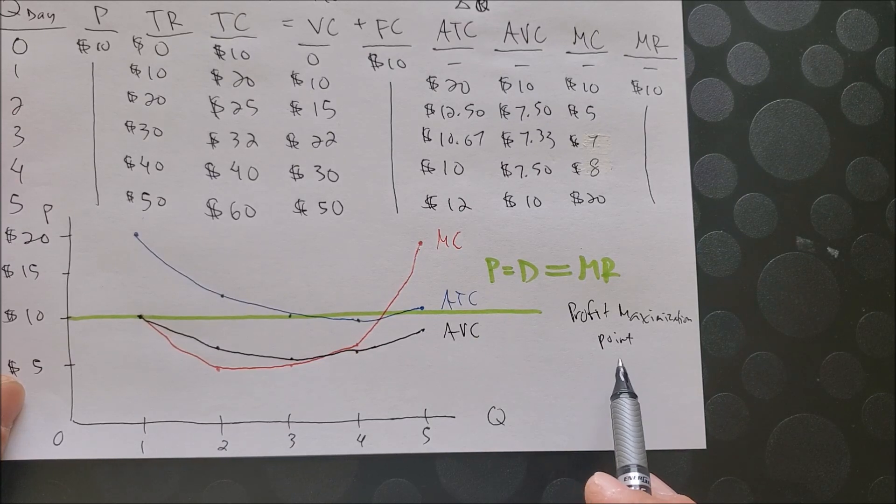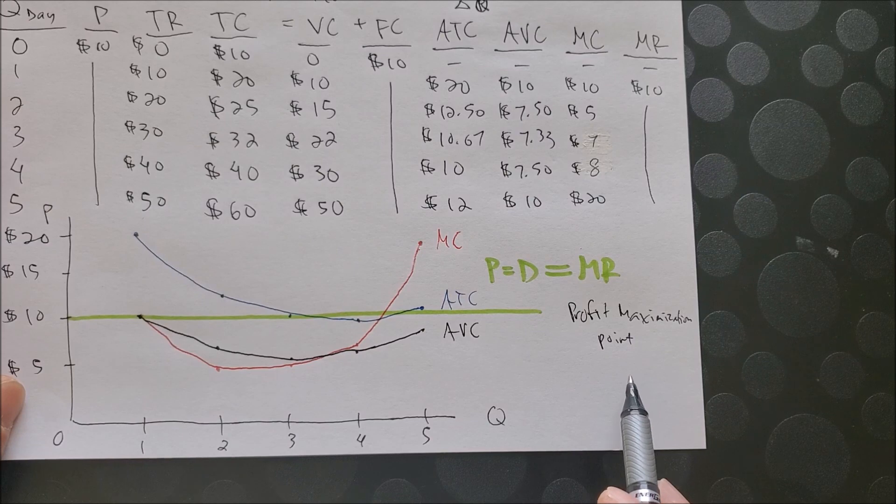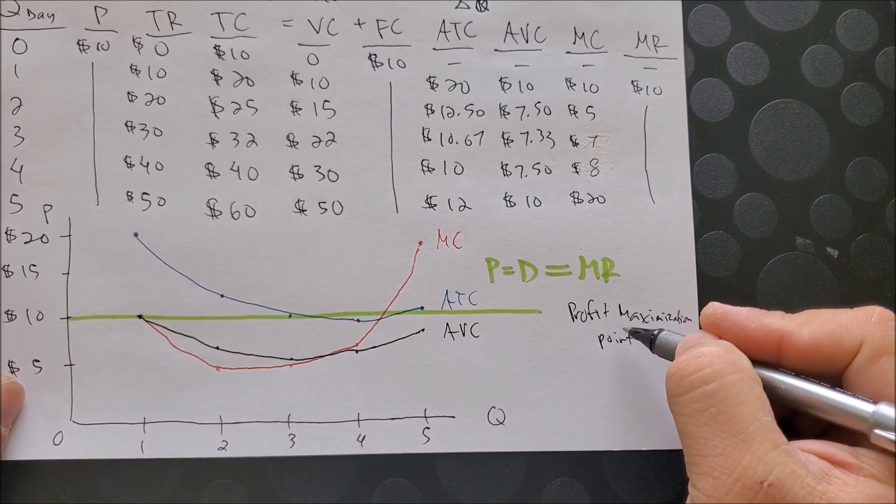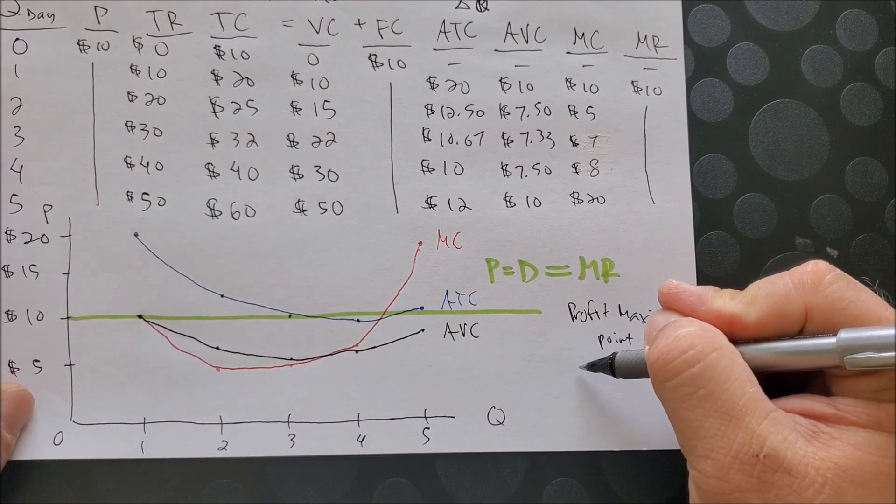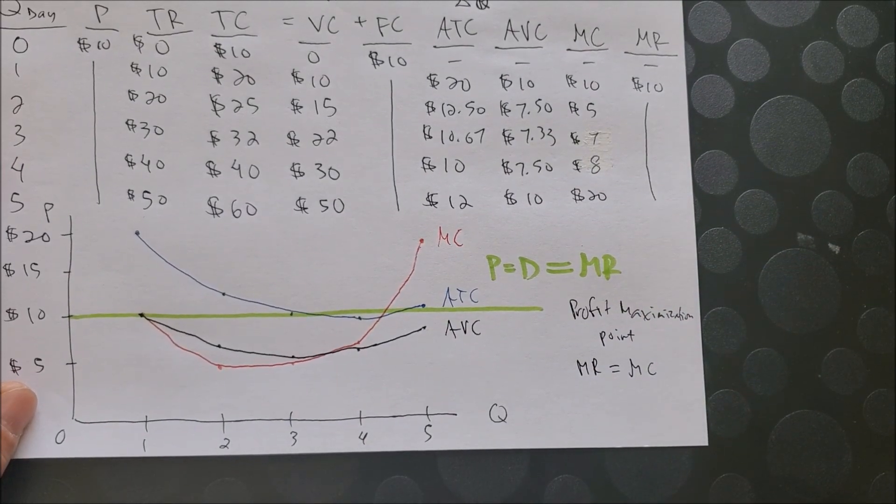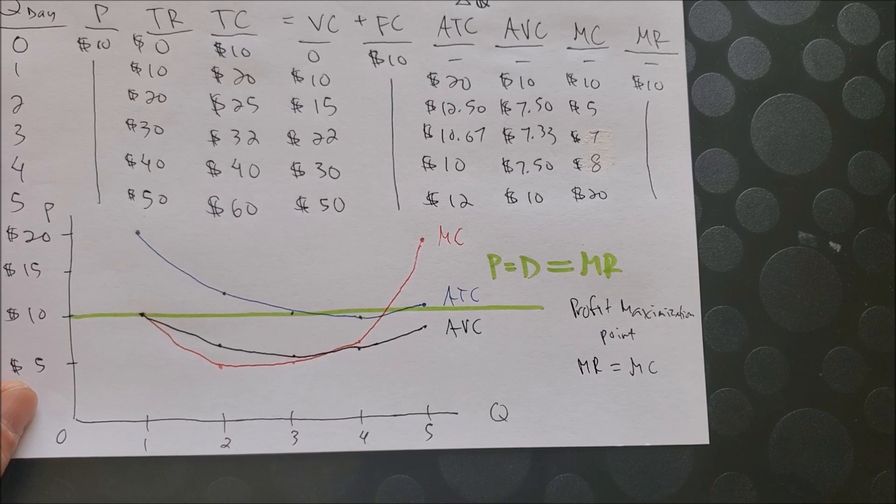So this profit maximization point is going to show us exactly at what last point are you going to make profit. So we know for a fact that profit maximization point is where MR equals MC. By rule, MR equals MC.